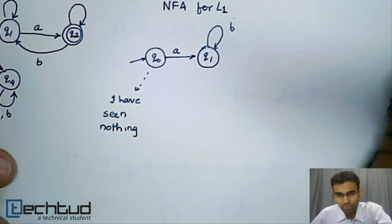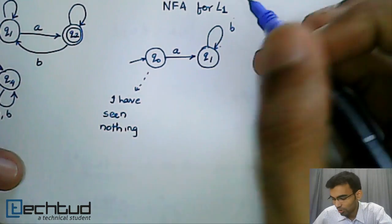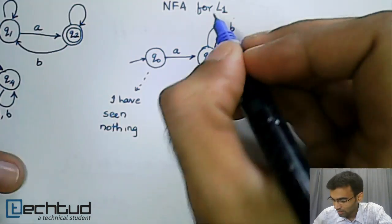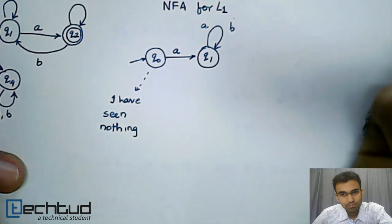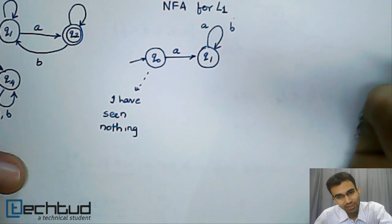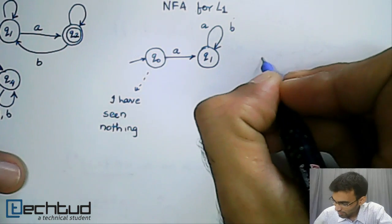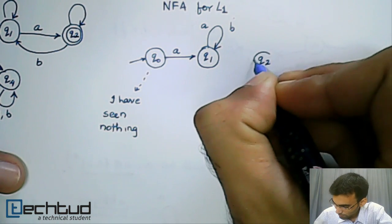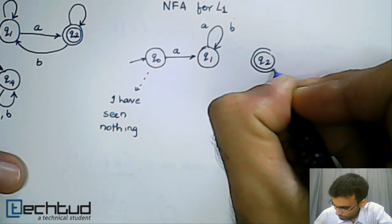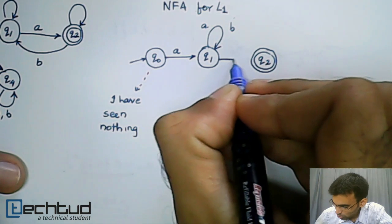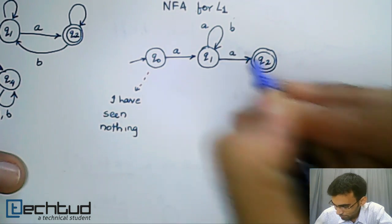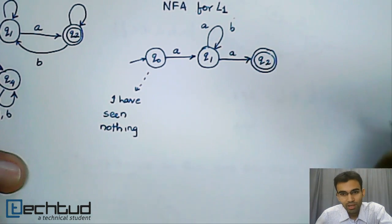I can also have an A and loop on Q1 and still not mark Q1 as a final state. I can say that Q2 is my final state, and I go from Q1 to Q2 on the last A. That's it.